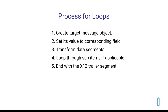At every level of looping, you create a target object, set its properties, transform it as necessary, loop through its subsets if applicable, and end by creating a trailer. Let's walk through this process in more depth, returning to the example of transforming an eligibility request.